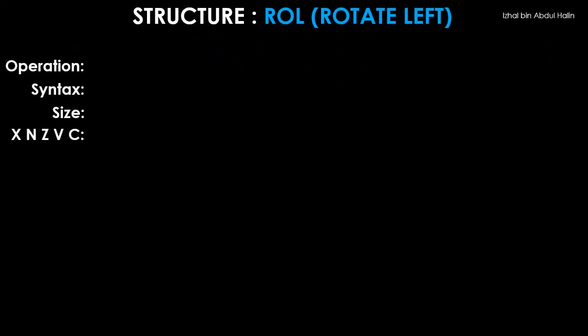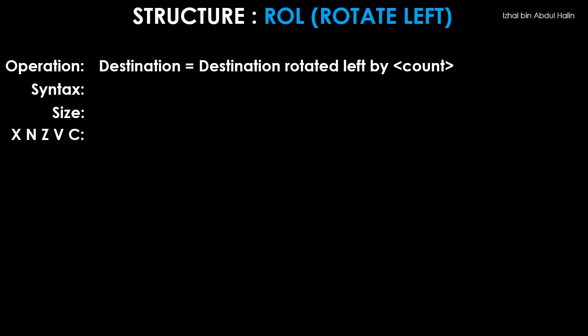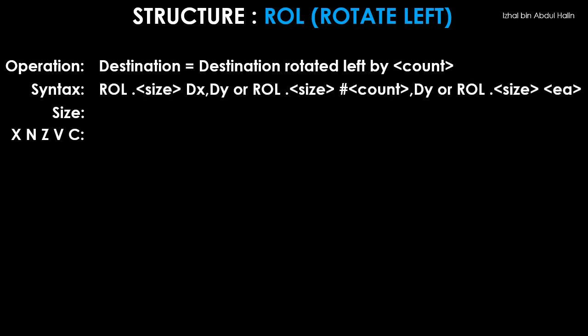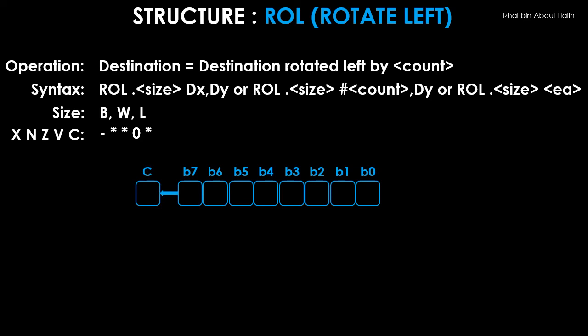The ROL instruction is used to rotate left data in a destination operand. Data is rotated one bit at a time until the number of rotations equals the specified count. The general syntax shows three variants available, with operand sizes of byte, word, and long word. All status registers except the X flag are affected. In the register structure, the C flag is connected to the MSB, and the MSB is also connected to the LSB. Each time data is rotated, bit 7 wraps around into bit 0 and is also moved into the C flag.